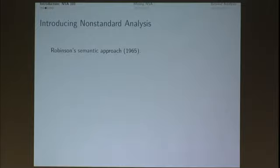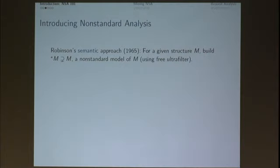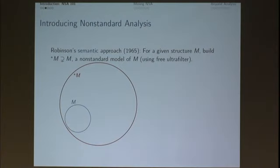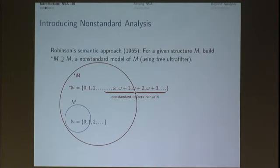Non-standard analysis 101, just in case. It all really started with Abraham Robinson's non-standard analysis in 1965, and essentially what it amounts to is a semantic approach: for a given structure M, say the real numbers, one uses a free ultra-filter to build a non-standard model, star M. Here we have our structure M sitting inside of the non-standard model, star M. If M has the natural numbers, then star N has a set with the same properties as the natural numbers, but much bigger. The new elements, not in N, are the non-standard numbers.